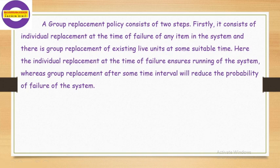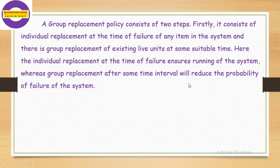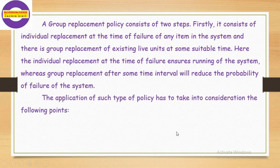Firstly, it consists of individual replacement at the time of failure of any item in the system, and secondly, group replacement of existing live units at some suitable time. The individual replacement at the time of failure ensures running of the system, whereas group replacement after some time interval will reduce the probability of failure of the system. The application of such a policy has to take into consideration the following points.